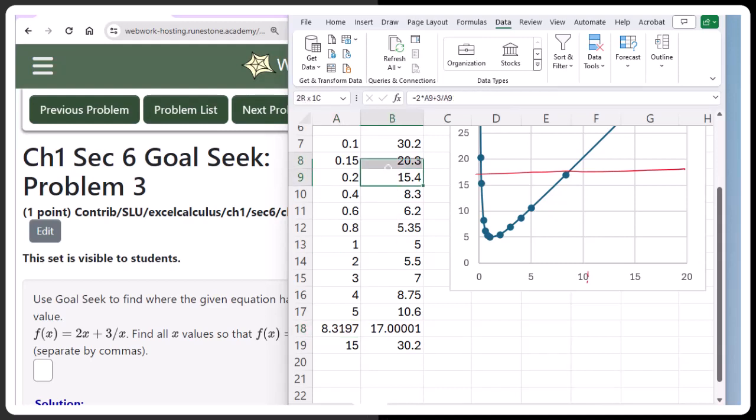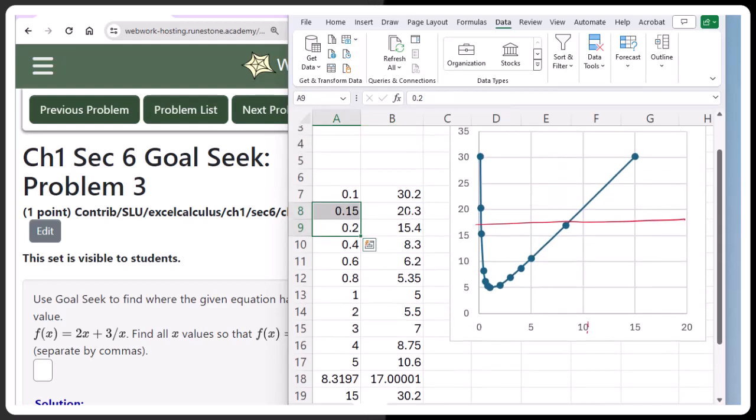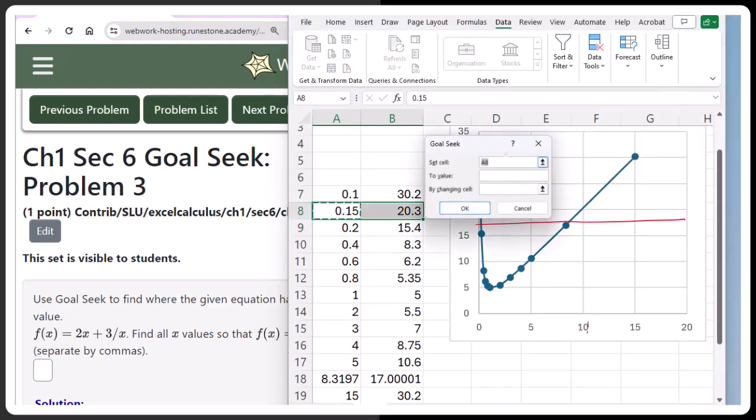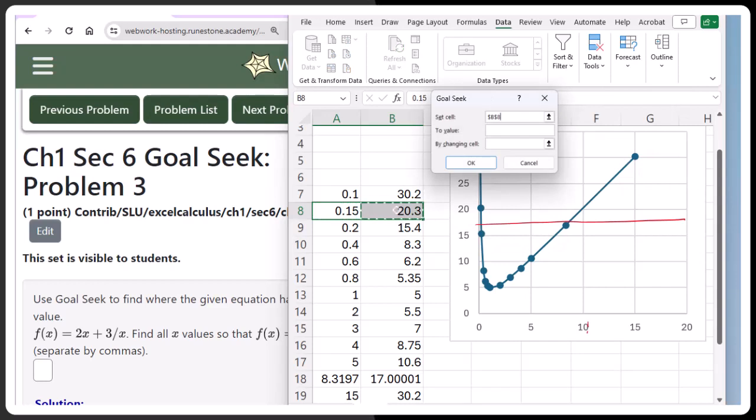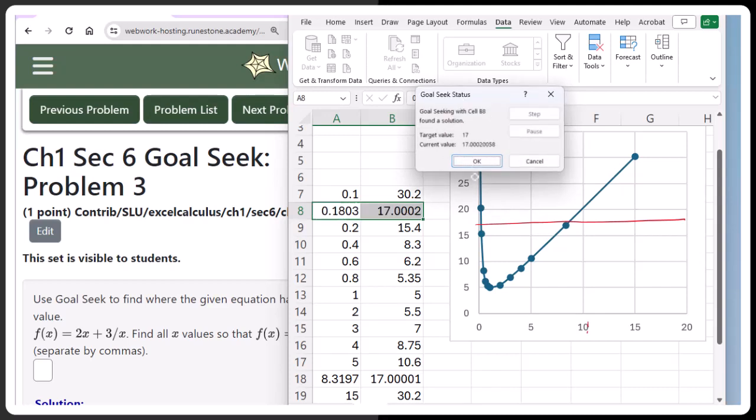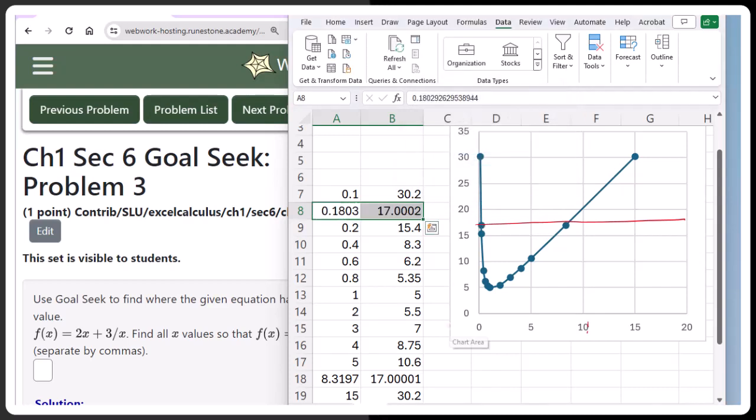And then again, up here, somewhere in between 15 and 20 on the Y values, that's where I'll have a value of 17. So somewhere in between 0.2 and 0.15 is where I would expect my other solution. I'll use this row. Open up the what if again. Change the Y-coordinate to a value of 17 by making changes in the X-coordinate and keep your solution.